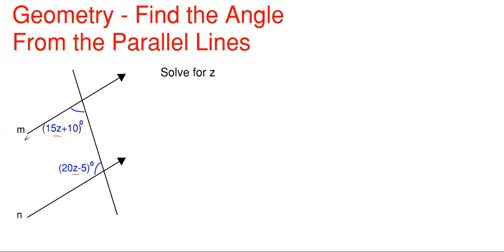What we have in this picture is line m and line n. They are in fact parallel because they have arrows on each of them signifying that they are parallel lines. Then we have this line cutting through them, which is called the transversal line, a fancy way of saying a line that cuts through two parallel lines. We have these two angles shown here that are given in variable form, and we are tasked with finding that unknown variable z.